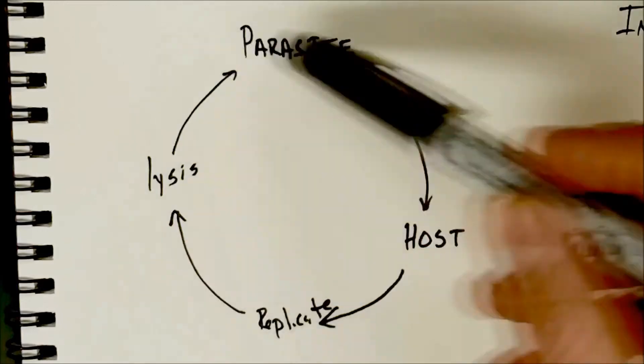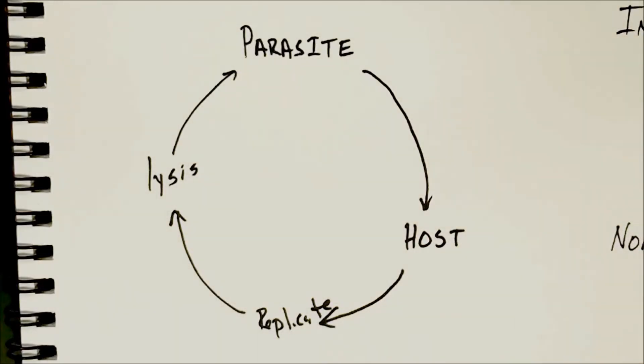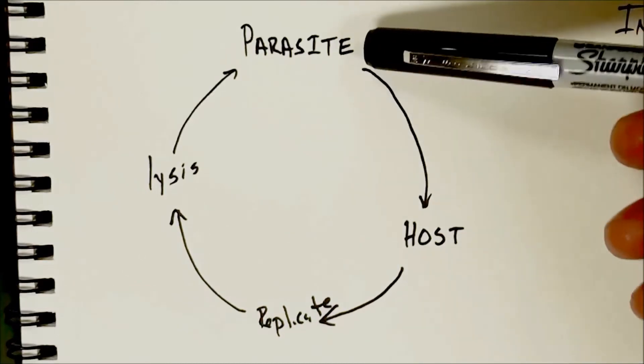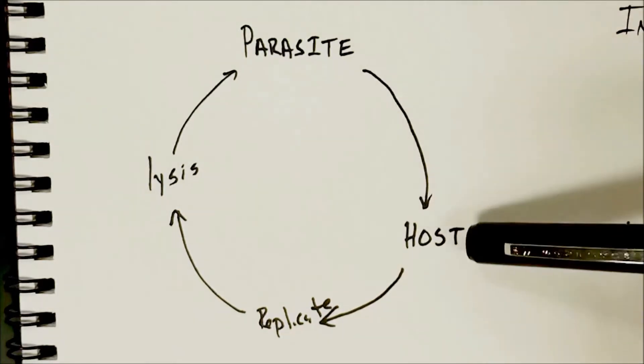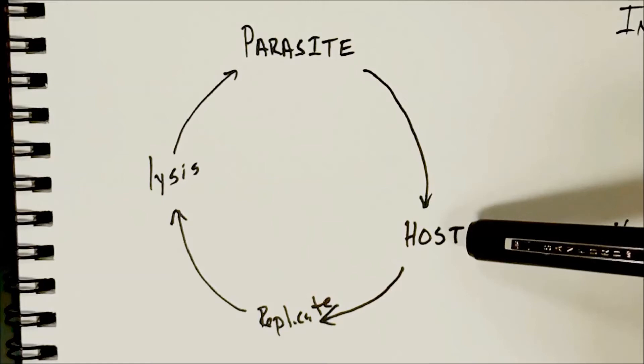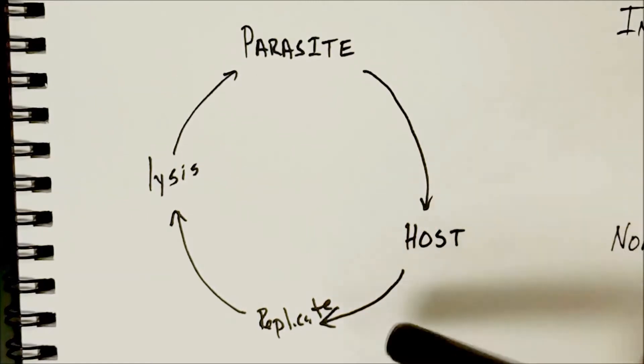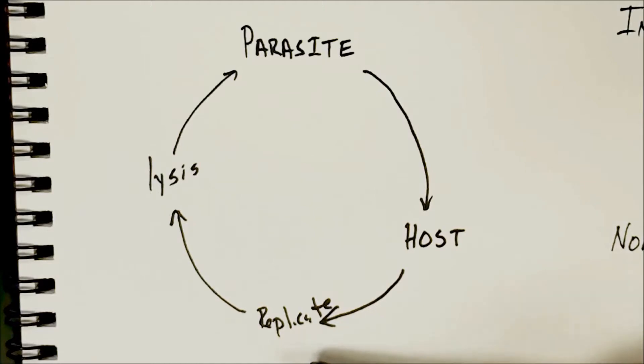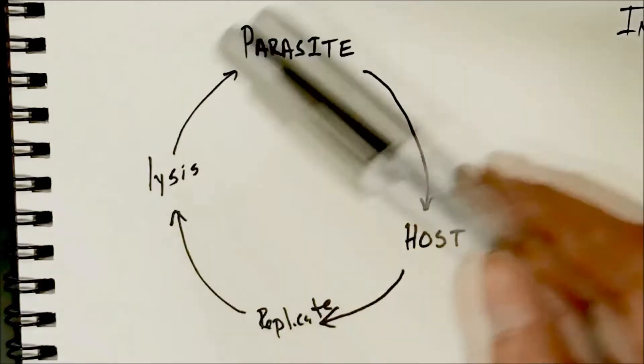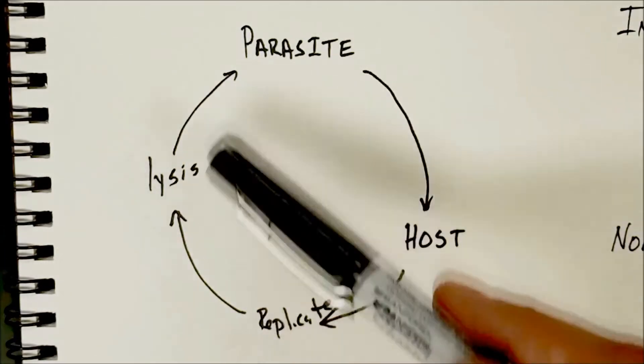So what I've diagrammed here is kind of a cycle of a parasite to give you an idea of what's important. Essentially a parasite cannot live on its own so it's got to have a host. Once in that host it will replicate itself and make more copies, but ultimately what's important is its ability to then get out and spread to other species, and that's called lysis.